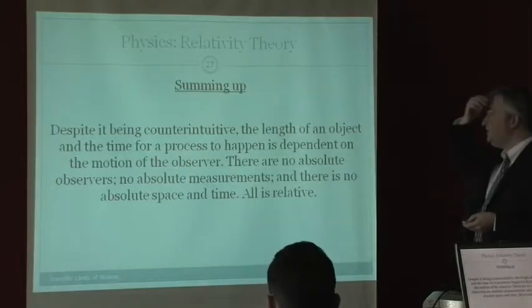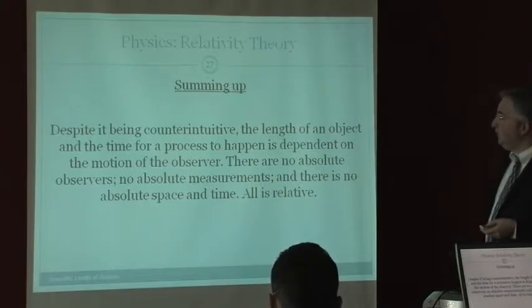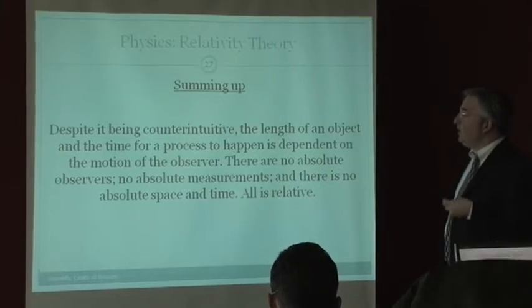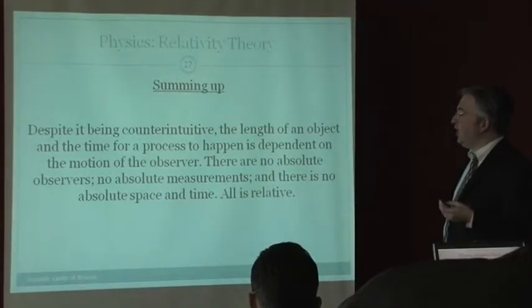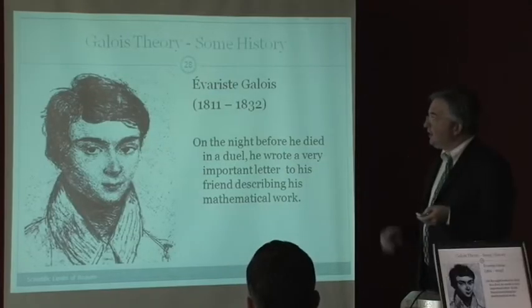So there's no such thing as absolute space. There's no such thing as absolutes. Summing up. Despite it being counterproductive, the length of an object and the time for the process to happen is dependent on the motion of the observer. There are no absolute observers, no absolute measurements, and there is no absolute space time.